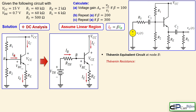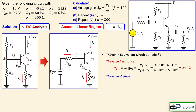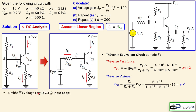The Thevenin resistance is the resistance looking from the base to the left. You see R1 and R2 in parallel since the VCC is then considered disabled and grounded. So R_Th equals R1 in parallel with R2, giving 24 kilo-ohms. For the Thevenin voltage we use the voltage divider rule: R2 over (R1 plus R2) times VCC, which gives exactly 9 volts.